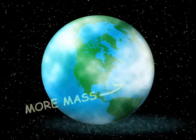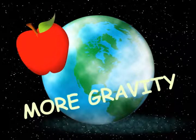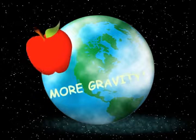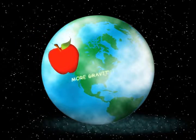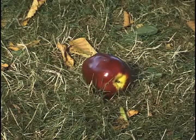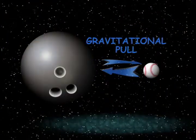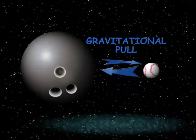The strength of the gravitational force is based on the amount of material in the objects, and the amount of material is called mass. One example of this is the Earth — it has a lot more mass than the apple. The more the mass, the more the gravitational pull. Because the apple has less mass, it moves more easily than the Earth. The apple falls down to the Earth rather than the Earth moving up toward the apple.